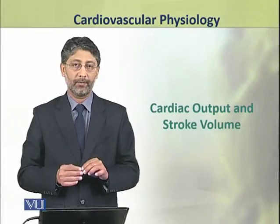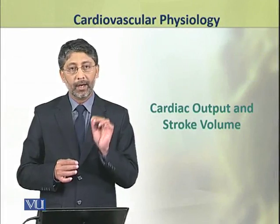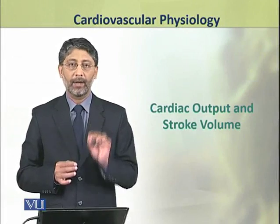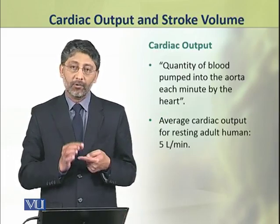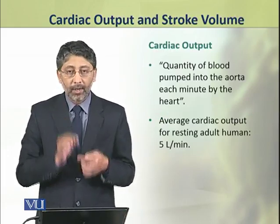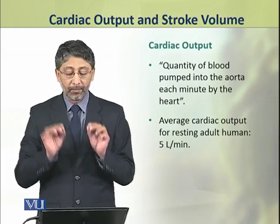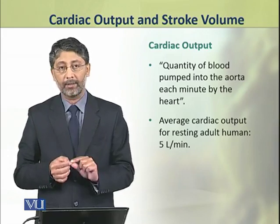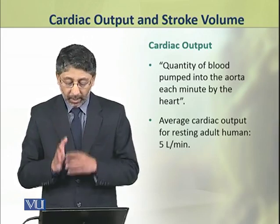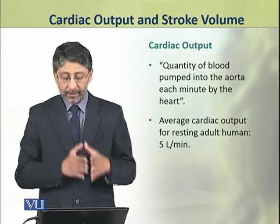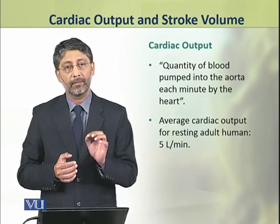Dear students, in this topic we shall discuss the cardiac output and stroke volume. Cardiac output is the quantity of blood pumped into the aorta each minute by the heart. The average cardiac output for a resting adult human is about 5 liters per minute.